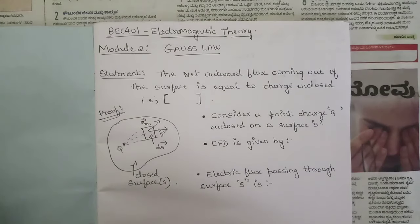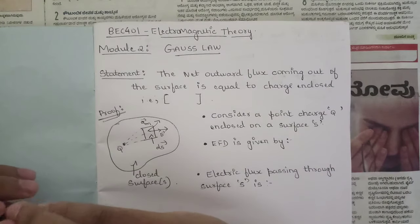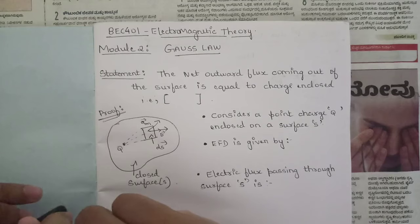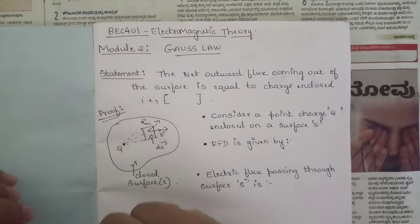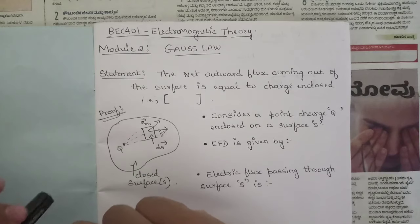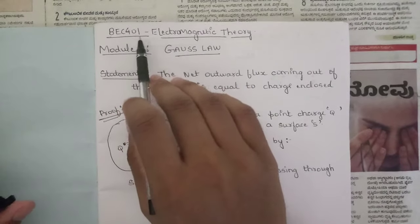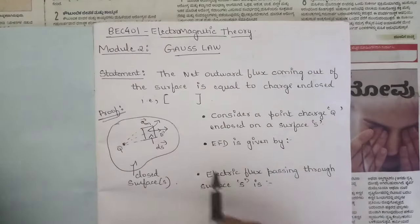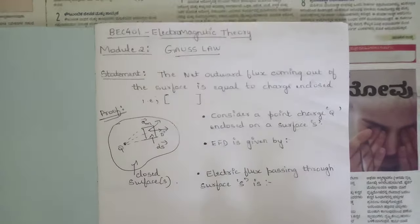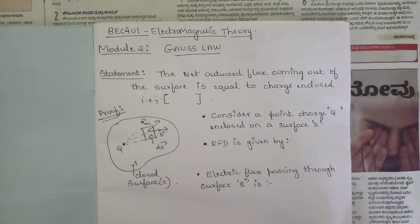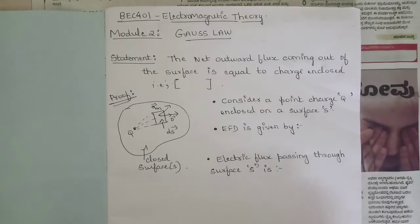Welcome to this new session. I am going to continue with the second module — the first module covering Coulomb's law is already done. The second module of this subject, BEC 401 (Electromagnetic Theory), is related to Gauss's Law. Let's quickly start with the concept.